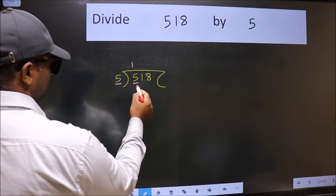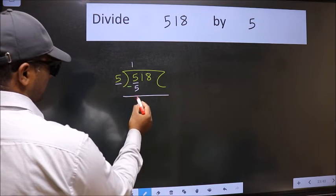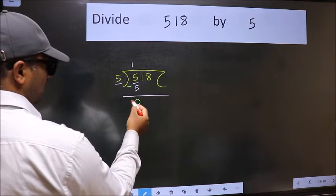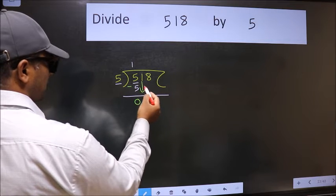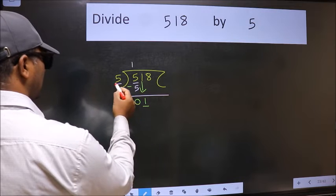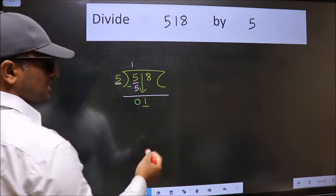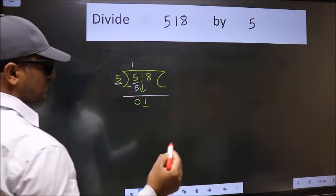Now we subtract and get 0. After this, bring down the beside number, so bring 1 down. Now we have 1 here and 5 here. 1 is smaller than 5, so we should bring down the second number.